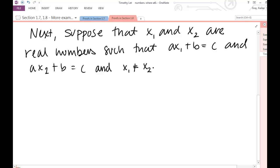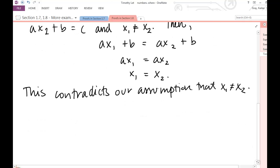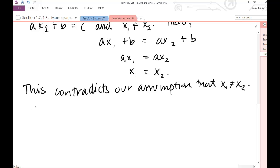Then, if they're both equal to c, we can set them equal to each other. ax1 plus b is equal to ax2 plus b, ax1 is equal to ax2, and x1 is equal to x2. This contradicts our assumption that x1 is not equal to x2.